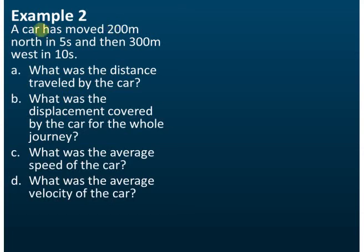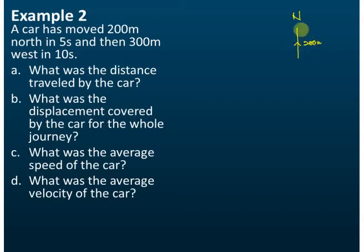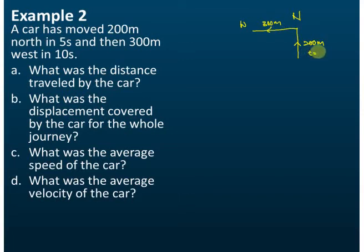Example two: a car has moved 200 meters north in five seconds, and then 300 meters west in 10 seconds. Let's say this is north, so the car moves 200 meters. Then it moves 300 meters west. The time taken for the initial movement is five seconds, so time equals five seconds.